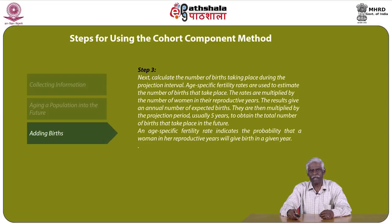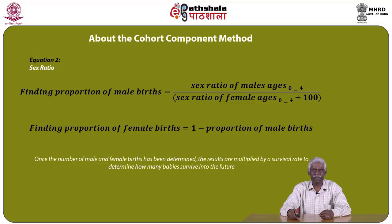Step 3 is adding births — that is, calculating the number of births taking place during the projection interval. Age-specific fertility rates are used to estimate the number of births. The rates are multiplied by the number of women in reproductive years, giving an annual number of expected births. These are then multiplied by the projection period, usually 5 years, to obtain the total number of births. The age-specific fertility rate indicates the probability that a woman in her reproductive years will give birth in a given year.